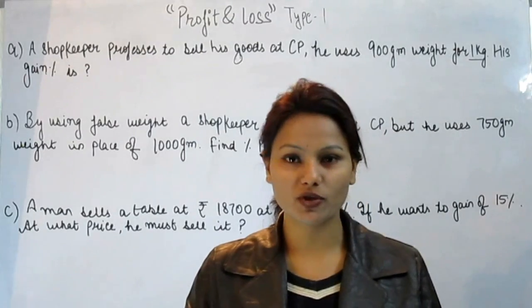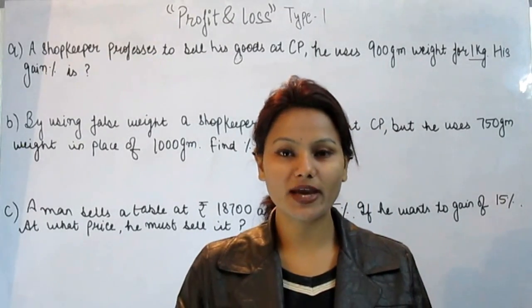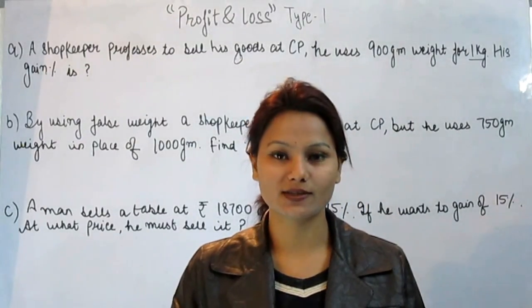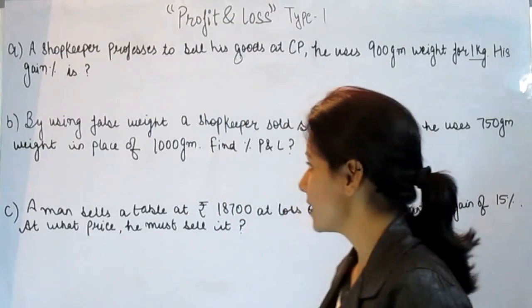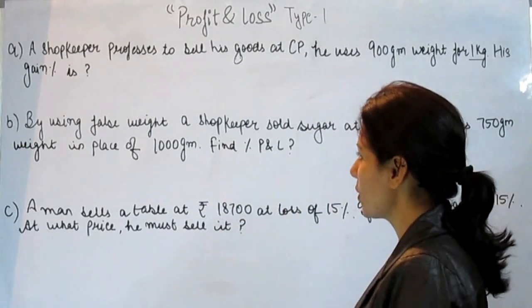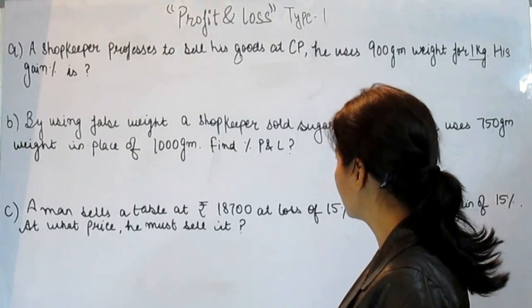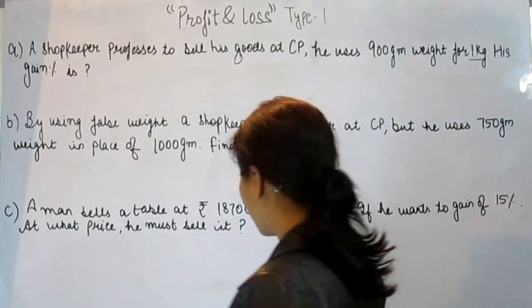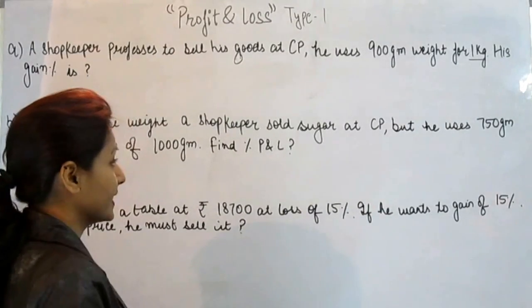Hello friends, welcome to commonjobswithpatient.com. Today I am going to teach you profit and loss. Our first problem: a shopkeeper proposes to sell his goods at cost price, he uses 900 gram weight for 1 kg.